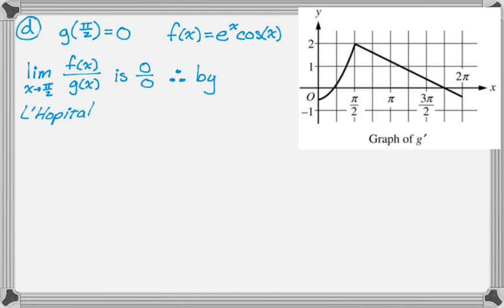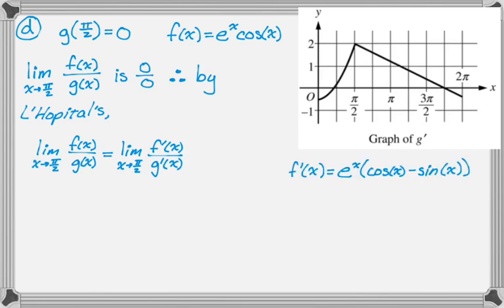So by L'Hôpital's rule, I know that the original limit, which was limit as x approaches pi over 2, f of x over g of x, is equal to the limit as x approaches pi over 2 of f prime of x over g prime of x. And this is something that we can work with. So we know that f prime from previous parts is e to the x the quantity cosine of x minus sine of x.